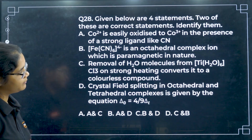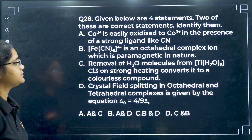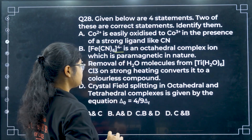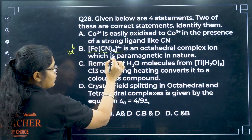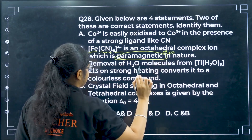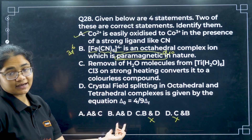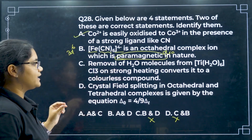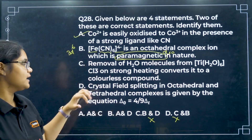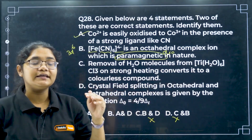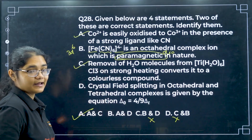Question 28: identify the two correct statements. Statement A: Co2+ is easily oxidized to Co3+ in the presence of a strong field ligand like CN− — correct. Statement B: Fe(CN)6 4− is paramagnetic — this is incorrect because Fe2+ gives 3d6 with a strong field ligand, all electrons pair up making it diamagnetic, so B is eliminated. Statement C: removal of water molecules from [Ti(H2O)6]Cl3 on heating converts it to a colorless compound — correct, because all D orbitals become degenerate with no d-d transition. So A and C are correct.